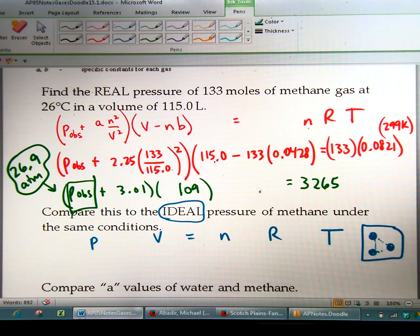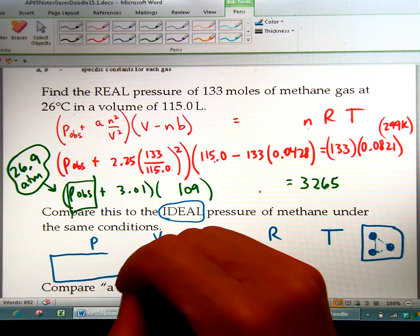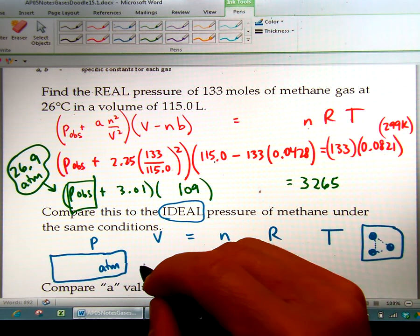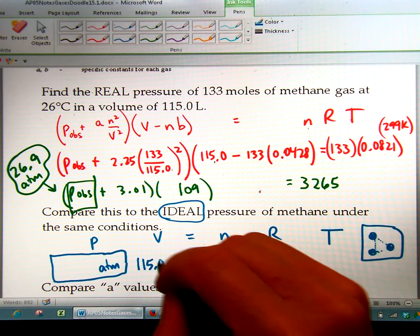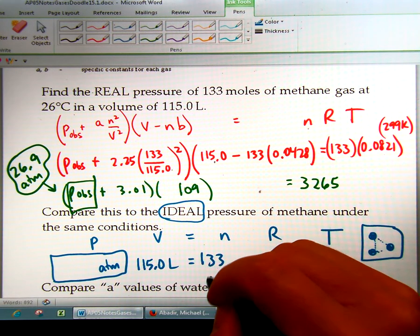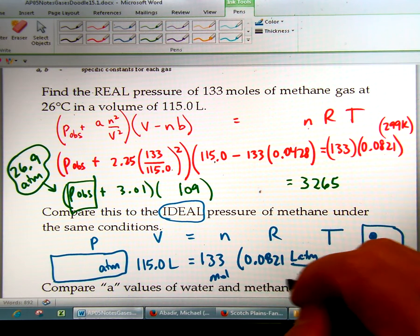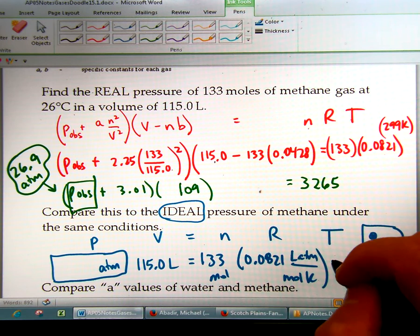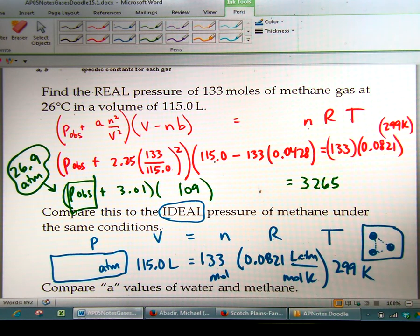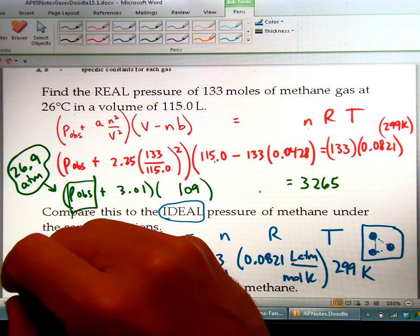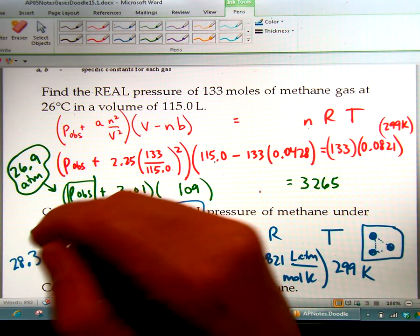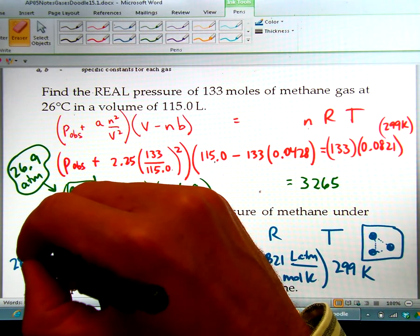Okay, now let's contrast that with solving for P with the ideal gas law. We'll just solve for P regularly without all the corrections. The volume is 115 liters. The moles is 133 moles. R is still 0.0821 liter atmospheres per mole Kelvin. Temperature is still 299 Kelvin. And we're going to take 133 times 0.0821 times 299 divided by 115, and we get 28.4 atmospheres.